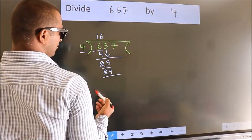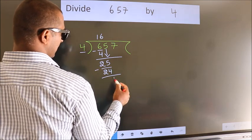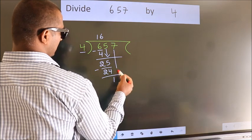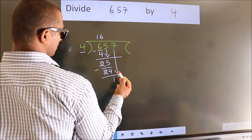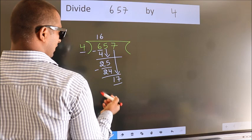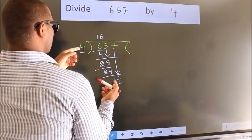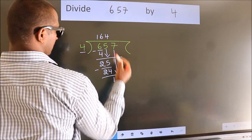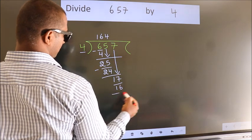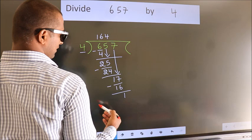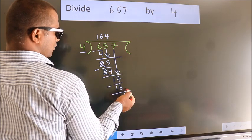Now we subtract. We get 1. After this, bring down the beside number, so 7 down. So 17. A number close to 17 in the fourth table is 4 times 4, which is 16. Now we subtract. We get 1. No more numbers to...